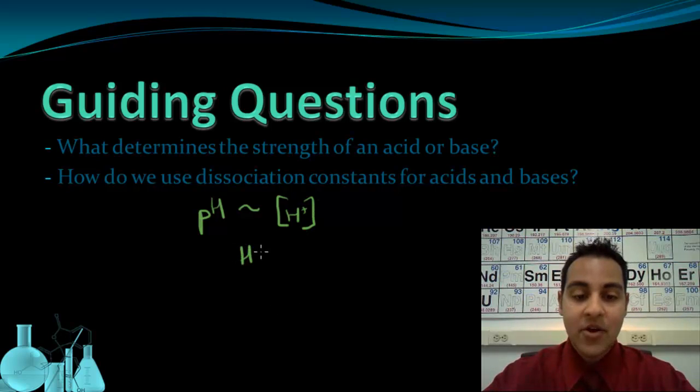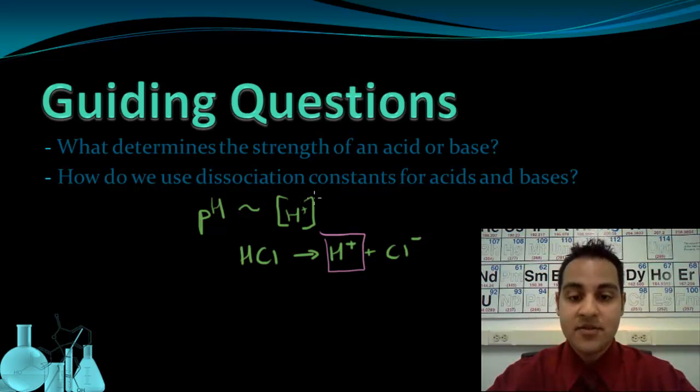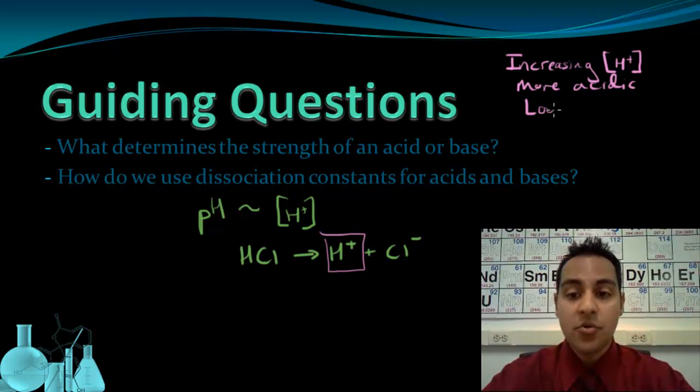And we've also looked at how an acid, like hydrochloric acid, HCl, dissociates to give off H-plus ions and Cl-minus ions. By contributing this H-plus into a solution, the acid is able to lower the pH because it increases the H-plus concentration. So increasing the concentration of hydrogen ions made it more acidic and therefore lowered the pH.